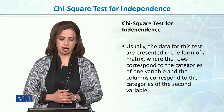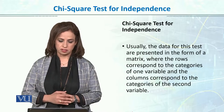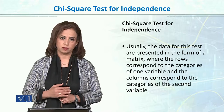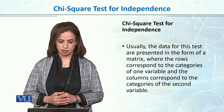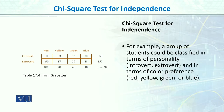Usually the data for the test are presented in the form of a matrix where the rows correspond to one category and the columns correspond to the other category. For example, we have data for students. One variable is color choice and the other is personality. There are two levels of personality — introvert and extrovert — and in color preferences we have four color preferences. So the data is in a matrix.